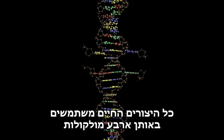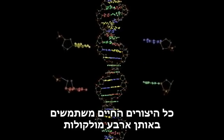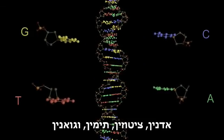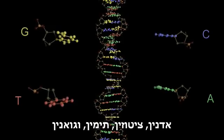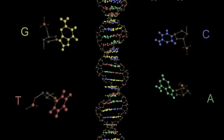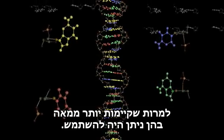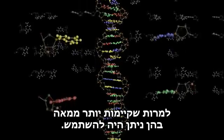All life uses the same four molecules — adenine, cytosine, thymine, and guanine — in the DNA ladder, although there are more than a hundred that could be used.